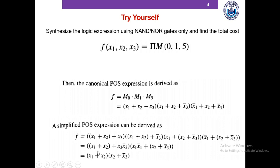When do we stop? We cannot apply Boolean algebra here and still maintain a product of sum expression. You could apply the distributive property to get x2 plus x1 times x2 plus x3-bar, but that gives a sum of product expression, not a product of sum. So in order to keep a product of sum expression, we do not apply Boolean algebra any further.